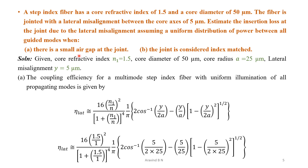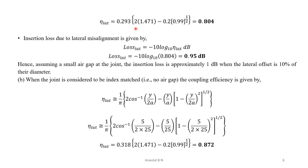For case A — a small air gap at the joint — the coupling efficiency is given by the full eta_lateral formula involving n1, n, y, and a. Substituting all known parameters, we obtain eta_lateral = 0.804. Calculating the insertion loss: Loss = −10 log₁₀(0.804) = 0.95 dB.